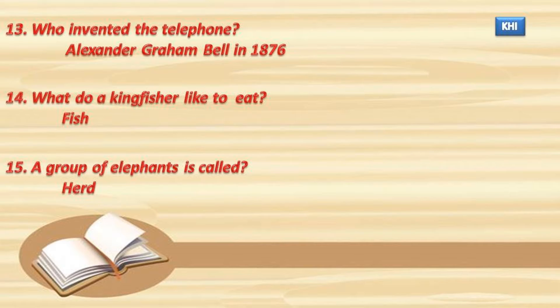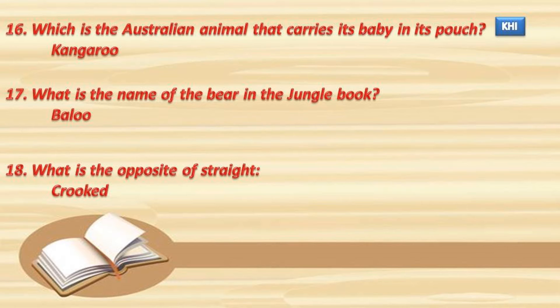15. A group of elephants is called a herd. 16. Which is the Australian animal that carries its baby in its pouch? Kangaroo. 17. What is the name of the bear in the Jungle Book? Baloo.